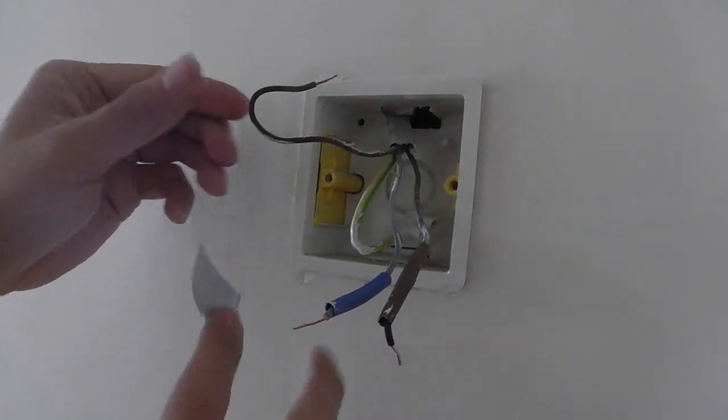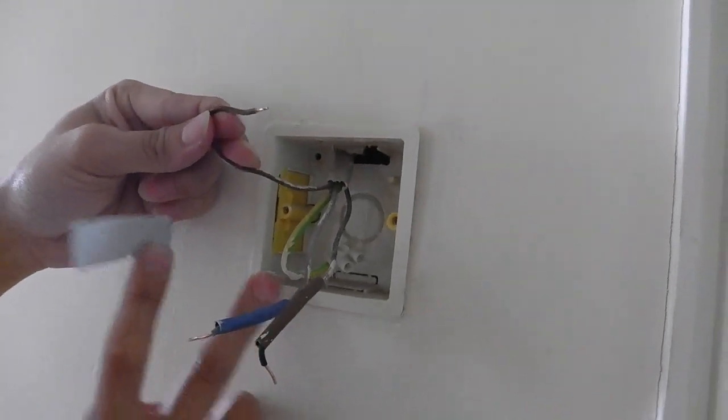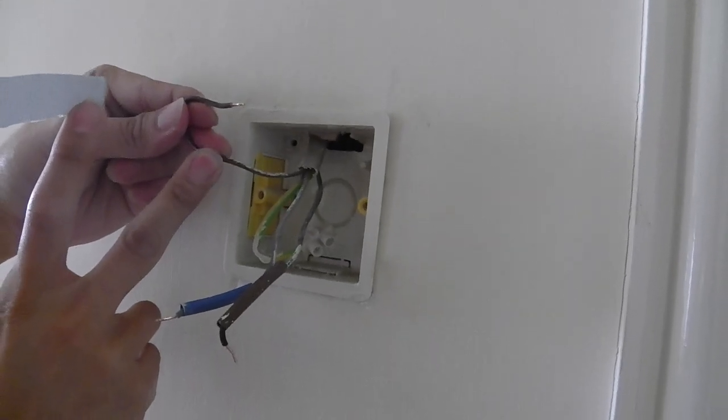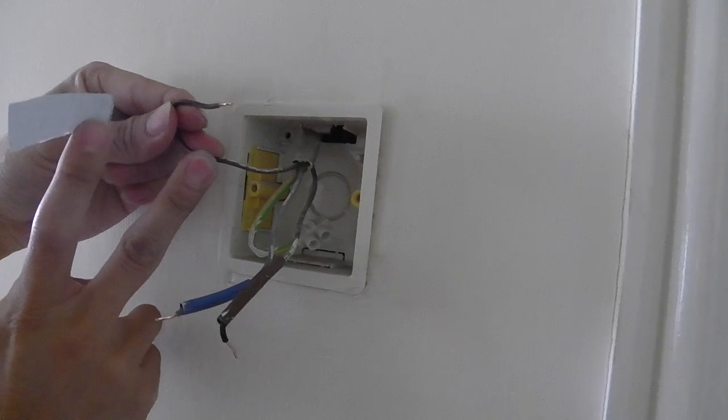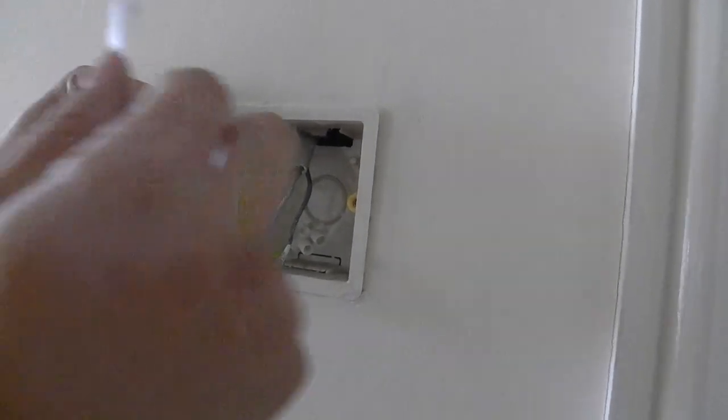What we will do now is we will seal off the brown wire, which is the live wire, because you will not need to use this for your learning thermostat. And just pay very good attention to this. Should you use this wire, this will completely burn off your entire device.